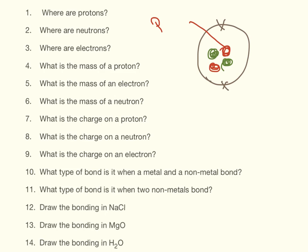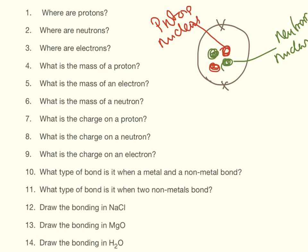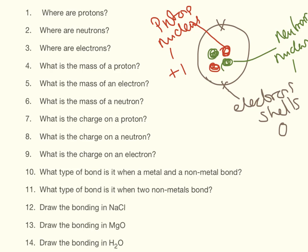Protons are here in the nucleus. Neutrons are also in the nucleus. And the electrons form the shells outside. Protons have a mass of 1. Neutrons have a mass of 1. Electrons have a mass of 0. Protons have a charge of plus 1. Neutrons have a charge of 0. Electrons have a charge of minus 1.